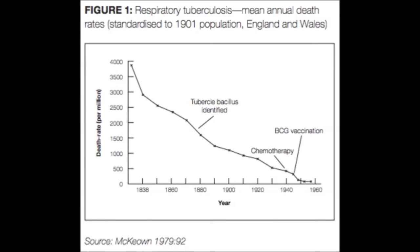Sanitation improved drastically within this time frame, and this would have contributed in large part to a reduction in the spread of tuberculosis, and therefore the reduction in deaths from the disease. Nutrition is another key example, with better nutrition improving the immune system's ability to protect against the infection and progression of diseases such as tuberculosis. I hope you found this video useful, and if you'd like to know more about applying to Oxbridge or preparing for interviews, then please do get in touch with us here at Young Tutors.